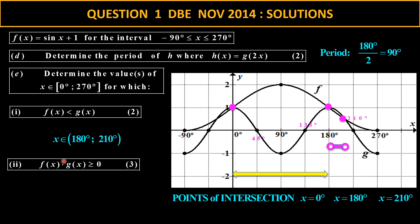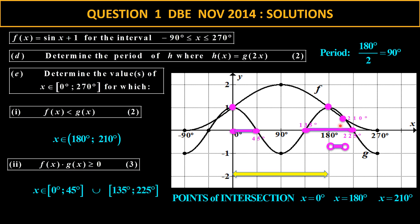Now we want to find where the product f(x)·g(x) is greater than or equal to zero. A positive times a positive gives a positive product, but a positive with a negative won't. We check each interval: between the relevant points it's positive times positive, then positive times negative, then positive times positive again. Between 0 and 135 and between 225 and the endpoint we get positive times positive. Note this uses greater than or equal to, so use square bracket notation — be careful of your notation.